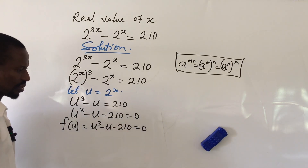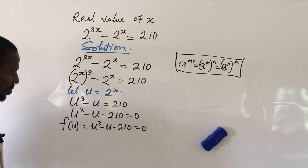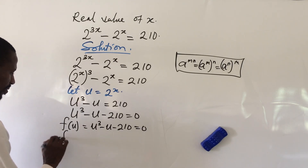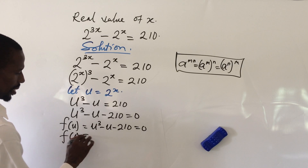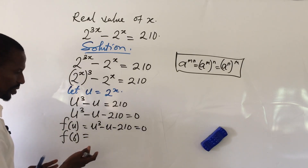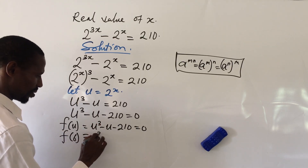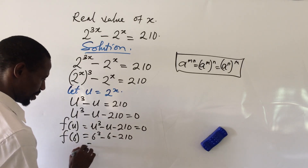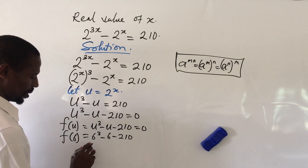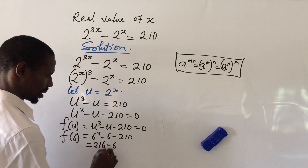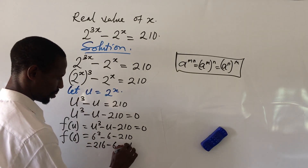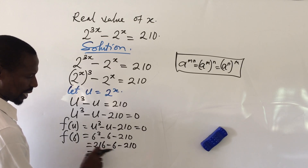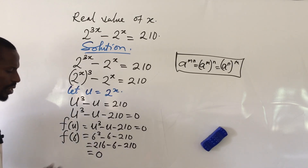We bring out the factors of 210, and we discover that f(6) gives us zero. Let's verify: f(6) equals 6 cubed minus 6 minus 210, which equals 216 minus 6 minus 210. Carrying out the subtraction, 216 minus 6 gives 210, and 210 minus 210 gives zero. So it is proven that f(6) equals zero, meaning (u minus 6) is a factor.